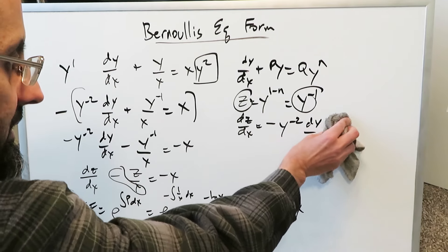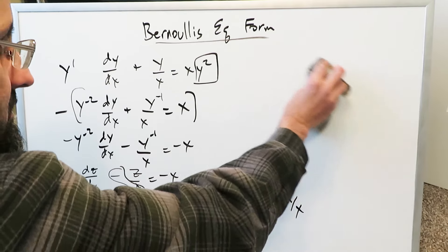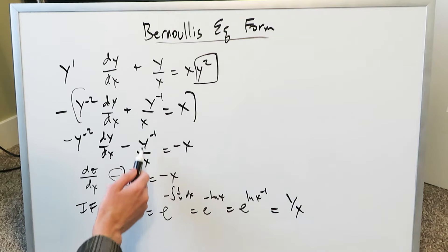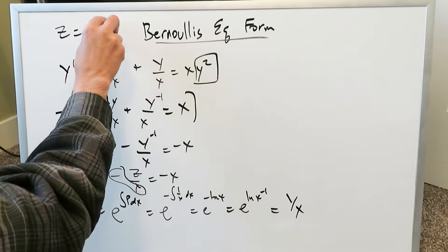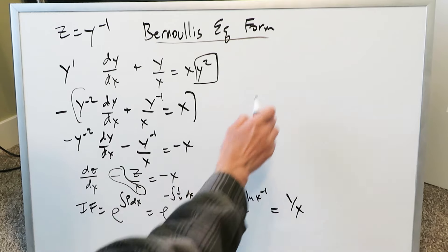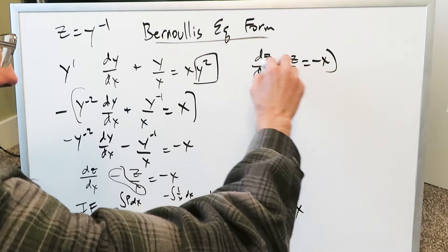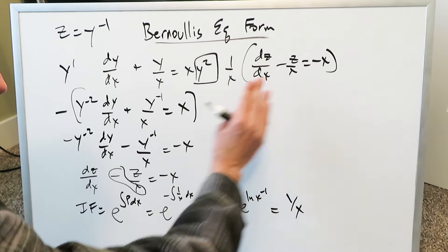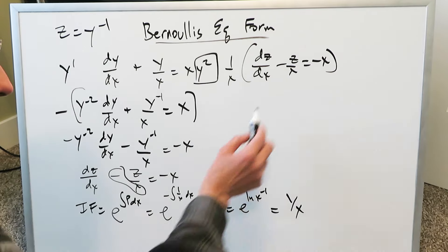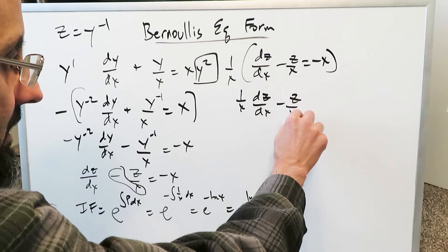Now I erase everything here to make space, keeping in mind that the substitution z equals y to the minus 1 will come in at the end. The integrating factor 1 over x will multiply across the linear form. Multiplying everything by 1 over x gives: 1 over x times dz over dx minus z over x squared equals minus 1. The left-hand side comes from the implicit differentiation — using the product rule on z over x — giving exactly d/dx of z over x equals minus 1.